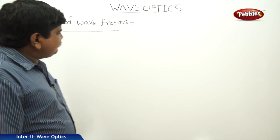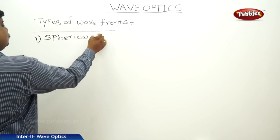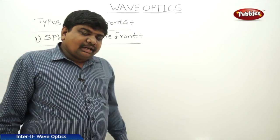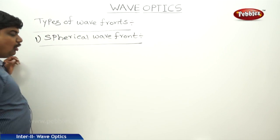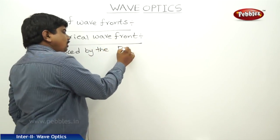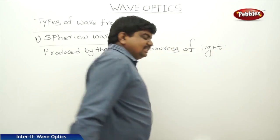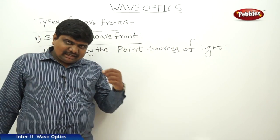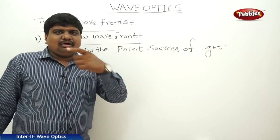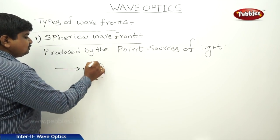Now we are discussing the types of wave fronts. The first one is the spherical wave front. Spherical wave fronts are produced by point light sources — light sources which are point sources. It is similar to when a disturbance occurs at a point on a water surface or river. Whenever a point source emits light, it occupies the shape of a spherical wave front.